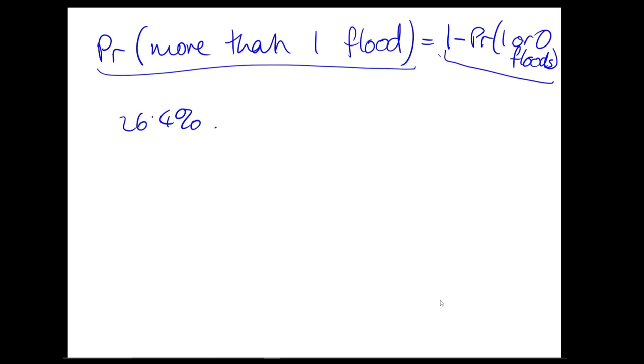Just over a quarter probability of seeing two or more floods in that time. This is one of the kind of issues with using this as a risk assessment. But people hear that and they don't think. They hear one in 100 years and they think, oh, it's not going to happen in my lifetime. It doesn't quite work like that, unfortunately.